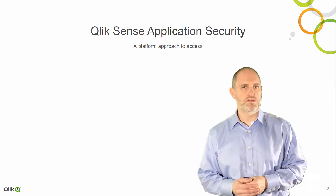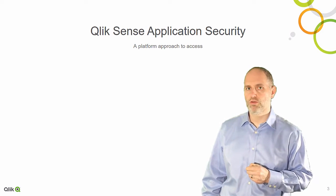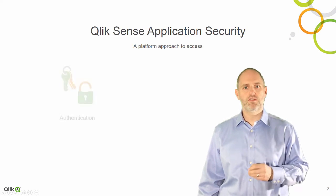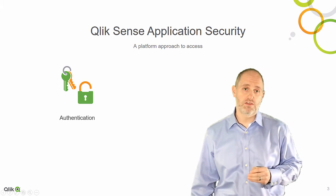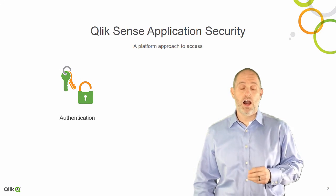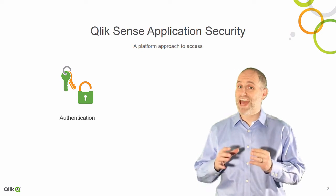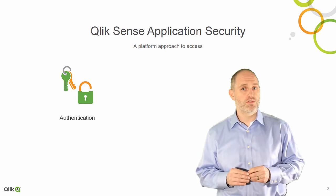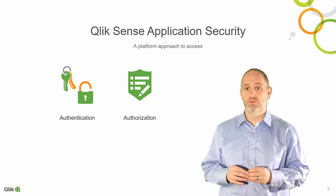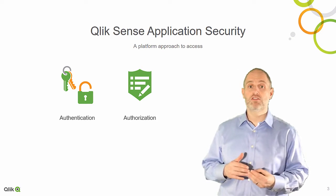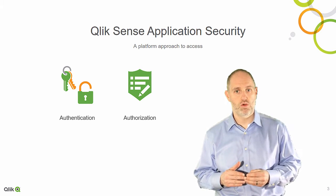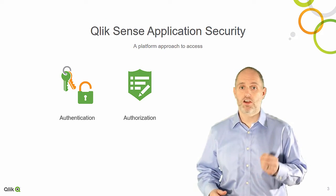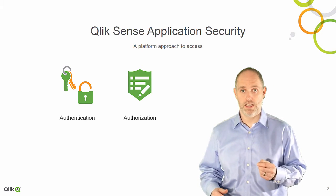Let's dive into application security and Qlik's platform approach to managing user access. Access to Qlik Sense begins with authenticating to the Qlik Sense server. Authentication in Qlik Sense grants access to the platform. Once Qlik Sense grants a user session, authorization checks are performed constantly to match the user to the appropriate access control. Changes to access control have an immediate impact on user access to content and capabilities.